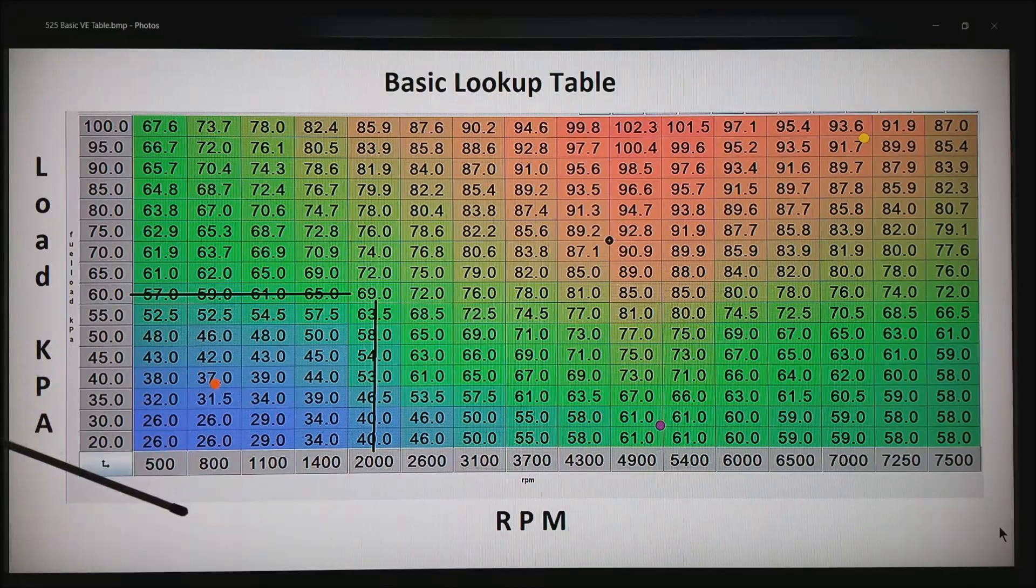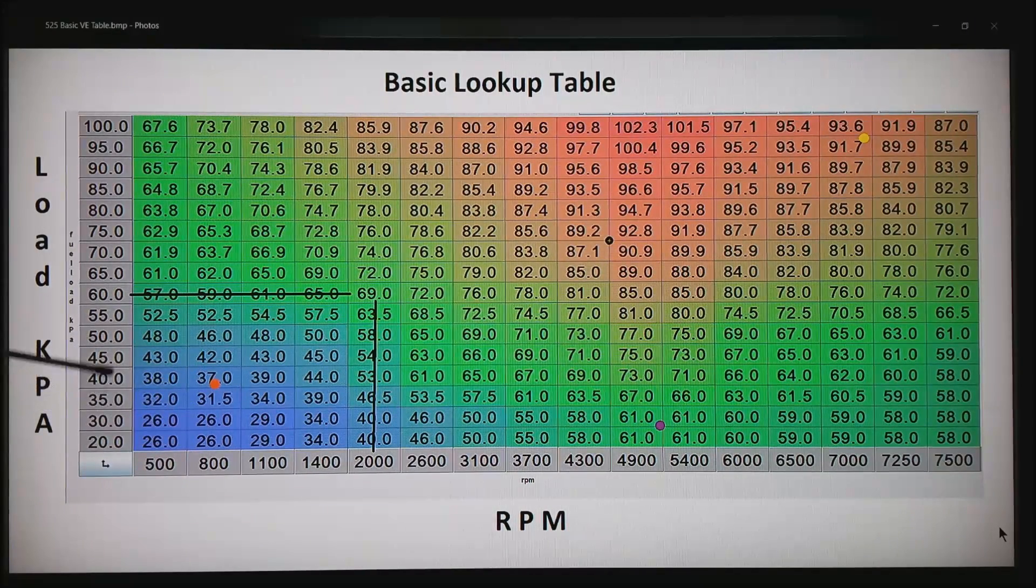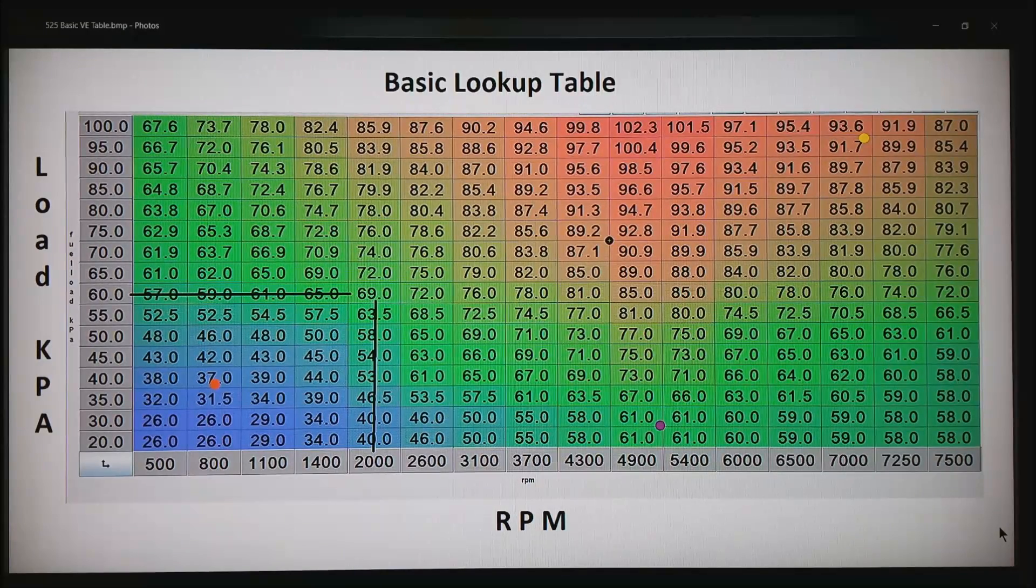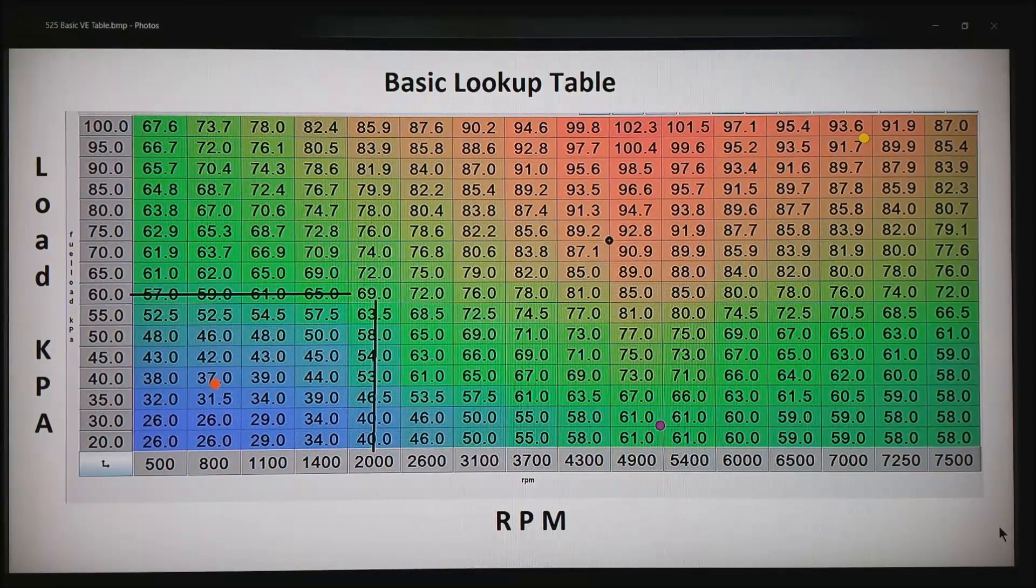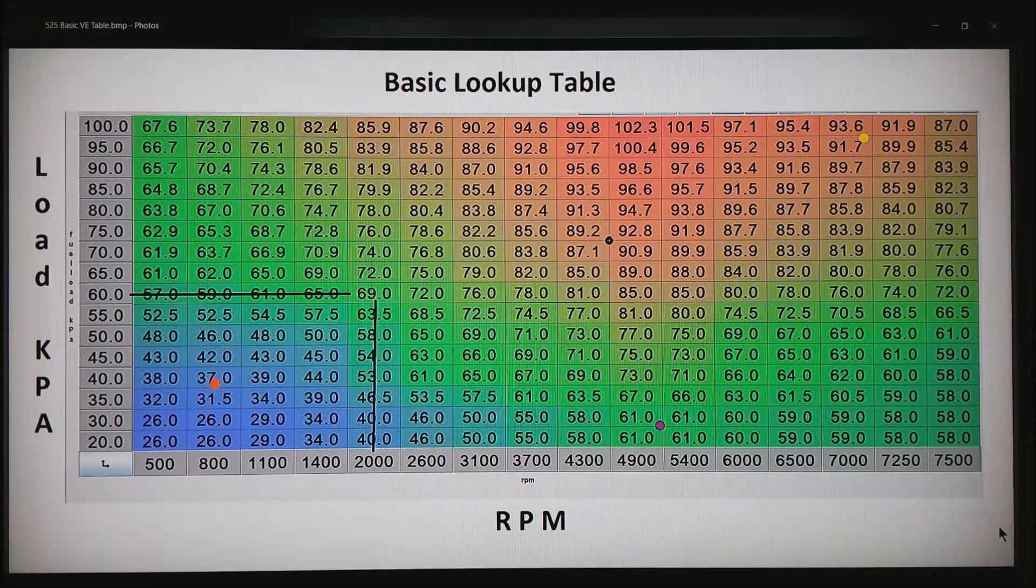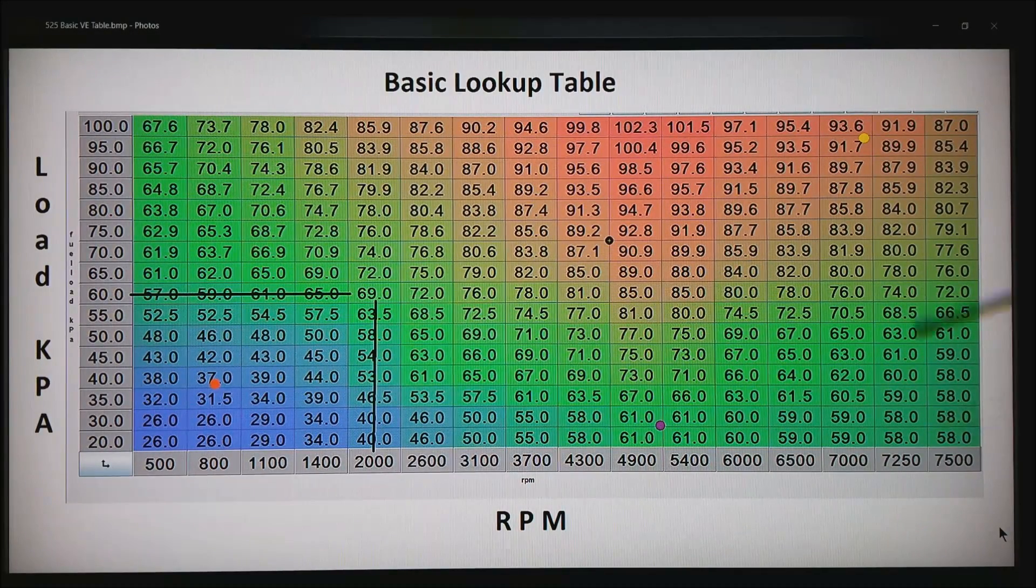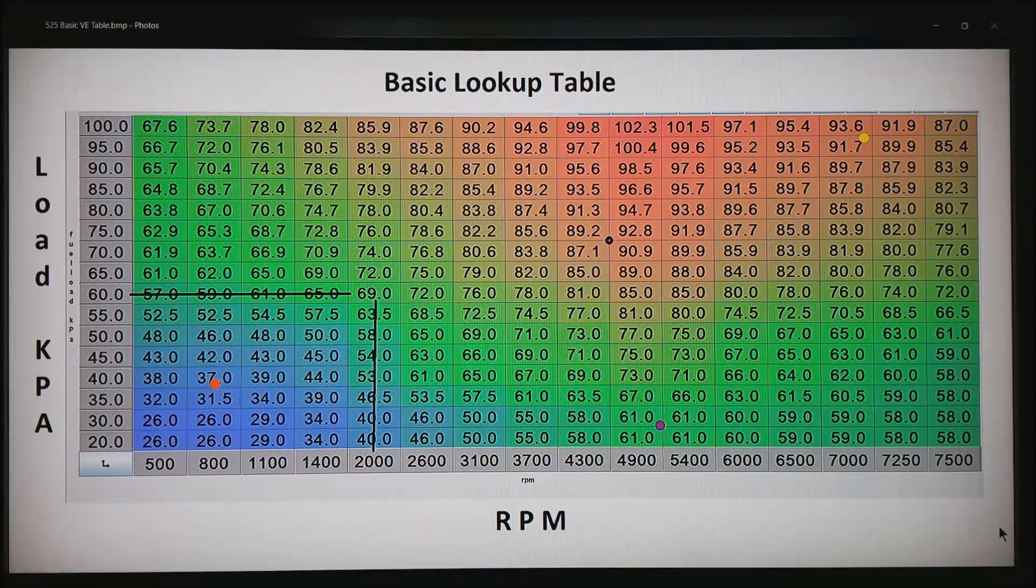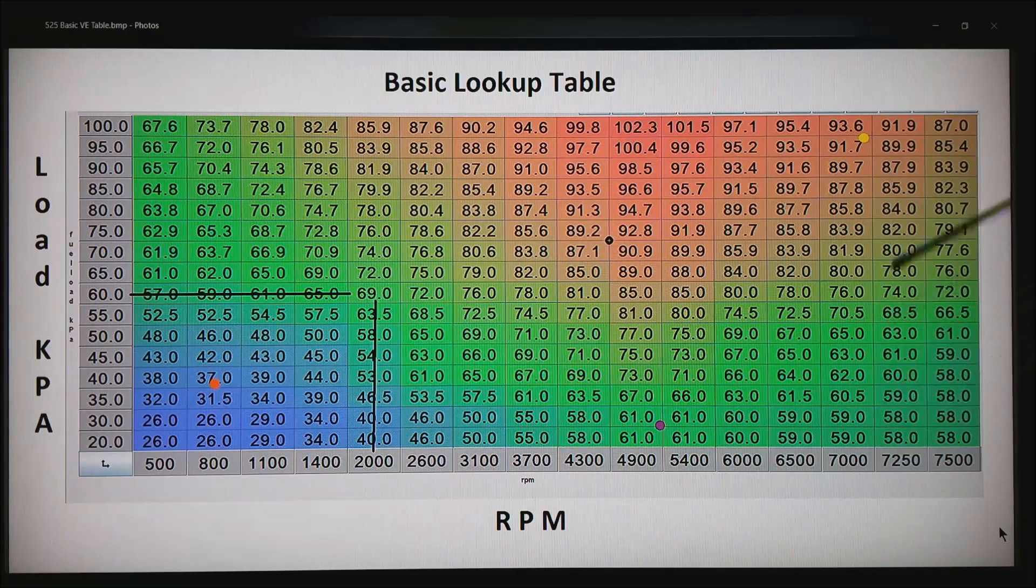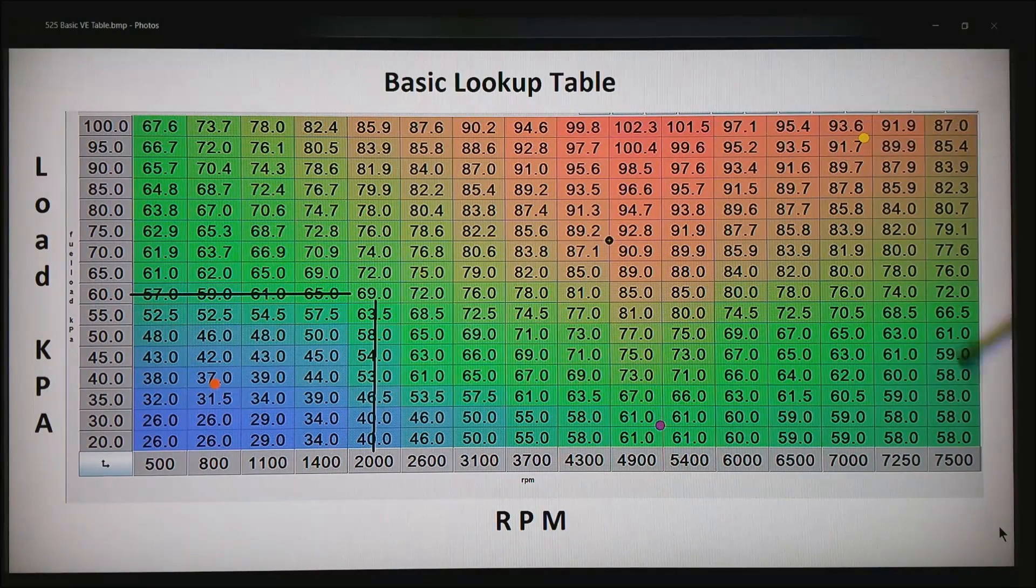The red dot would be 800 rpm and 40 kPa, a typical idle location in the volumetric efficiency map. On the bottom, the purple dot might be where you are in a downshift. The yellow dot is 100 or close to 100 kPa in the intake and 7000 rpm. So this would be the full throttle area.